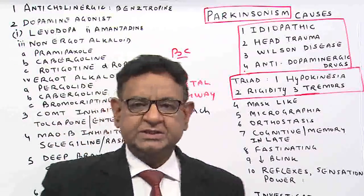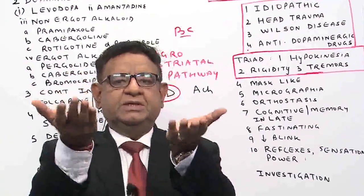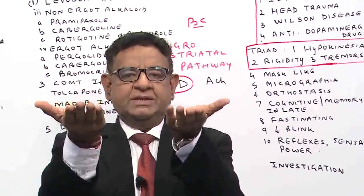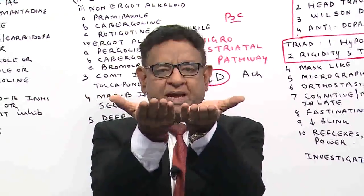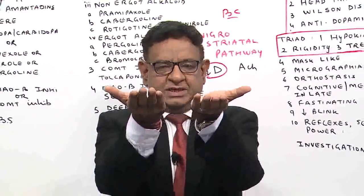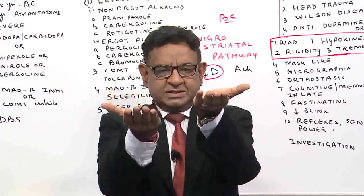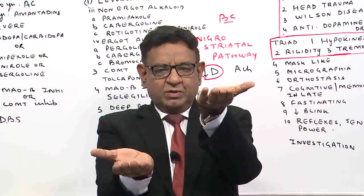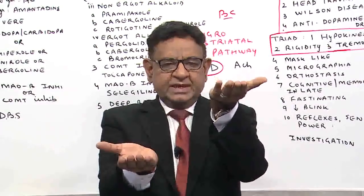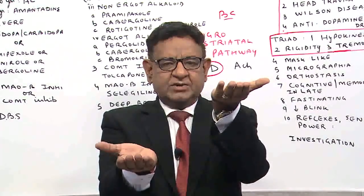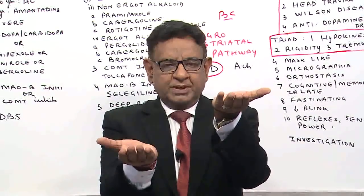You can see this better — look at me. This is dopamine, this is acetylcholine, they are balanced. In this disease, dopamine level goes down. So there is excess of acetylcholine and a low amount of dopamine.